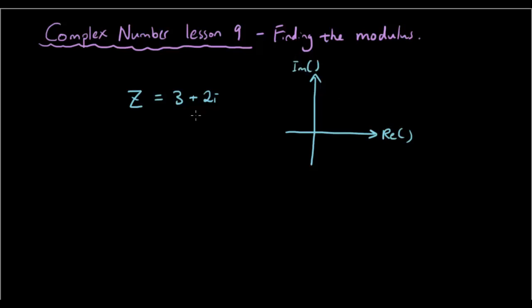The real part of this number is 3, so 0, 1, 2, 3, and the imaginary part is 2, so 1, 2, and this number is represented by a dot called z.